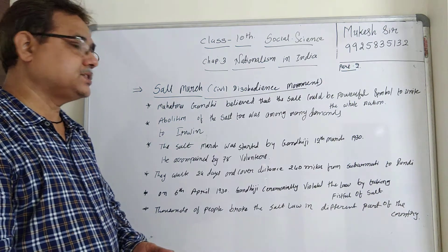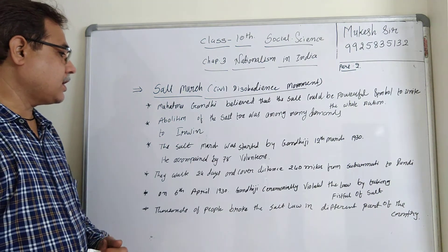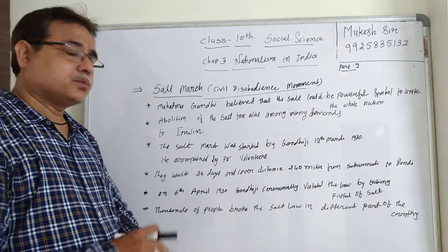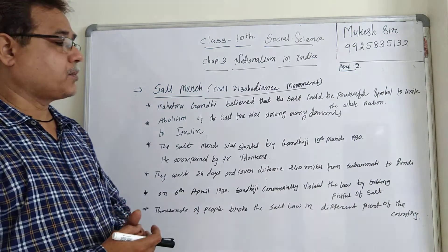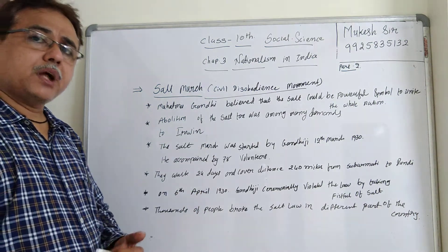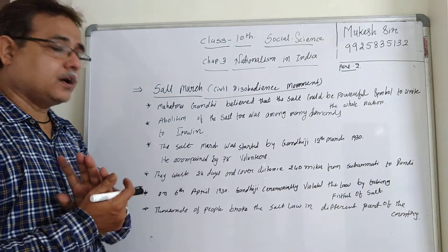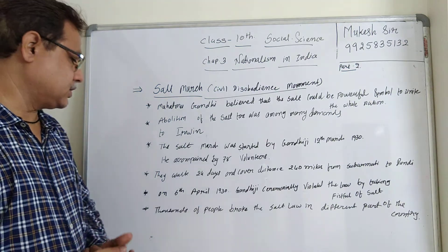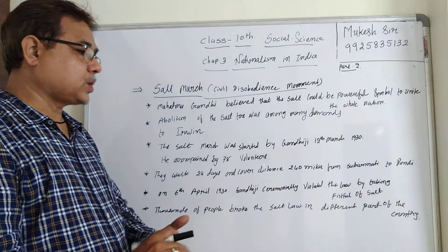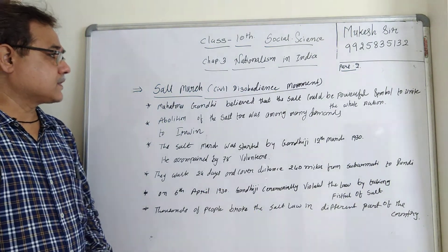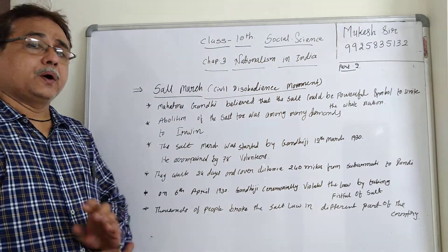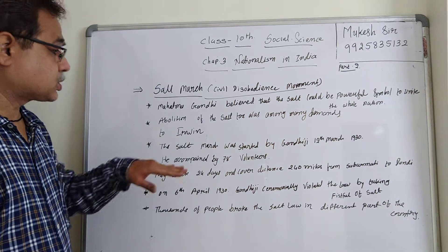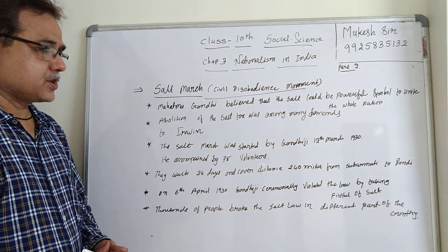The Salt March was started by Gandhiji on 12th March 1930, accompanied by 78 volunteers. They took 24 days and covered a distance of above 240 miles from Sabarmati Ashram, Ahmedabad. On 6th April 1930, Gandhiji ceremonially violated the law by taking a fistful of salt, and thousands of people broke the salt law in different parts of India.